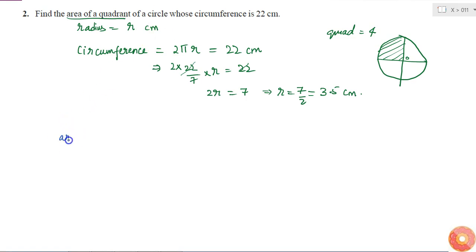So I can tell that area of quadrant is equal to 1 fourth of area of circle. The area of the circle will be πR². So this is equal to 1 fourth into π into R².